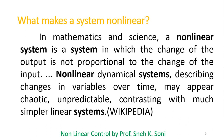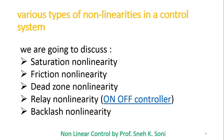Now, which are the different nonlinearities present in the system? There are different types: saturation nonlinearity, friction nonlinearity, dead zone nonlinearity, relay nonlinearity, and backlash nonlinearity. These are the different types of nonlinearity present in a control system. In this session the discussion is kept to a basic understanding of nonlinear control systems, and in upcoming sessions we will discuss detailed explanations for all these nonlinearities, starting with saturation nonlinearity.